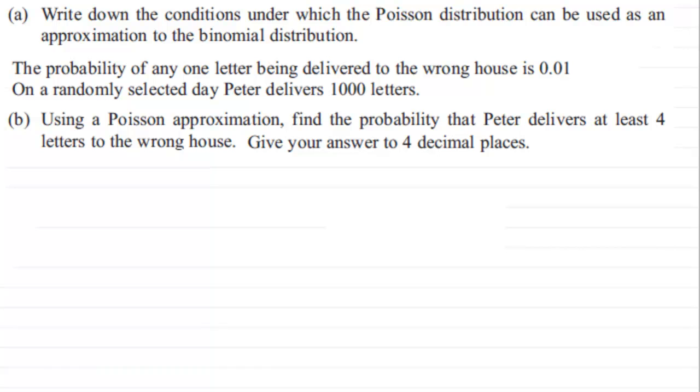Okay, well what we have here is first of all we've got to write down the conditions under which the Poisson distribution can be used as an approximation to the binomial distribution. And the answer to this would be that the number of trials would have to be very large. In other words, n has to be a large value. And the probability of success, p, has to be small. So that would be the kind of answer I'd want to put down for that.